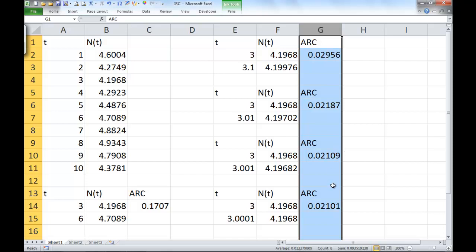Some of the digits on the end are changing, but they're actually getting smaller and smaller. We're actually computing a limiting value here. So as we look down this column G, the average rate of change values are getting closer and closer to one specific number. In this case, it's 0.021.